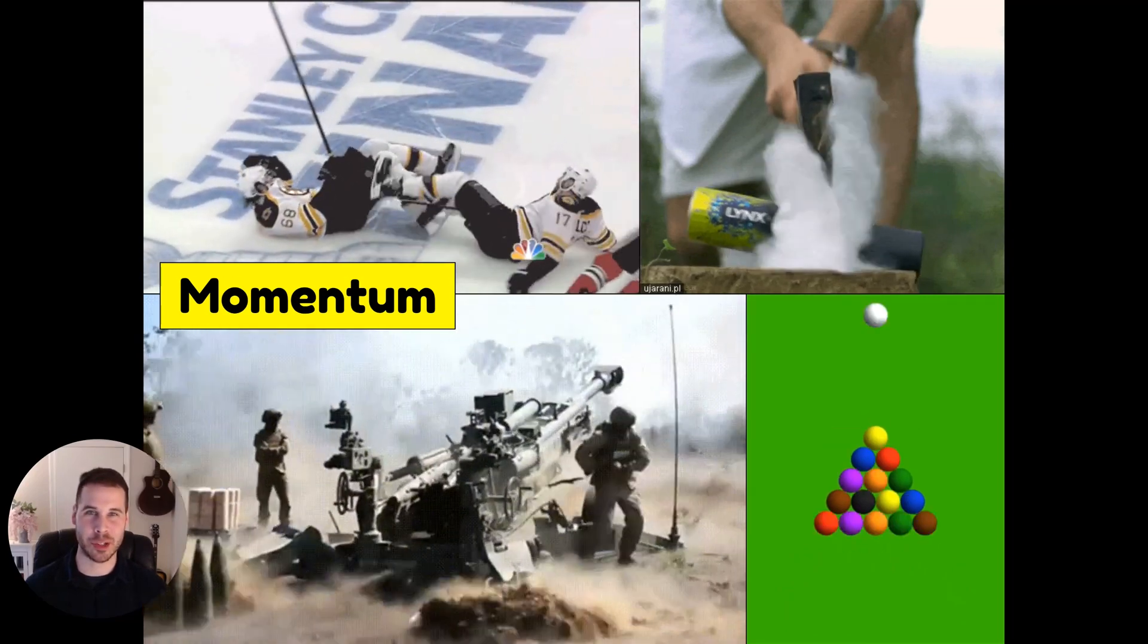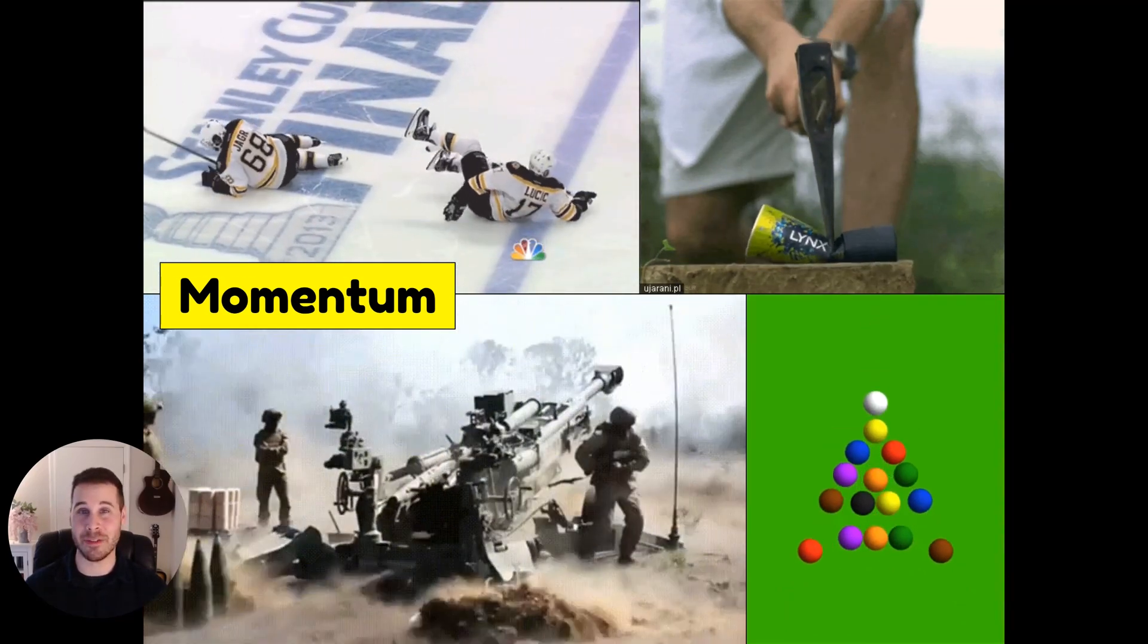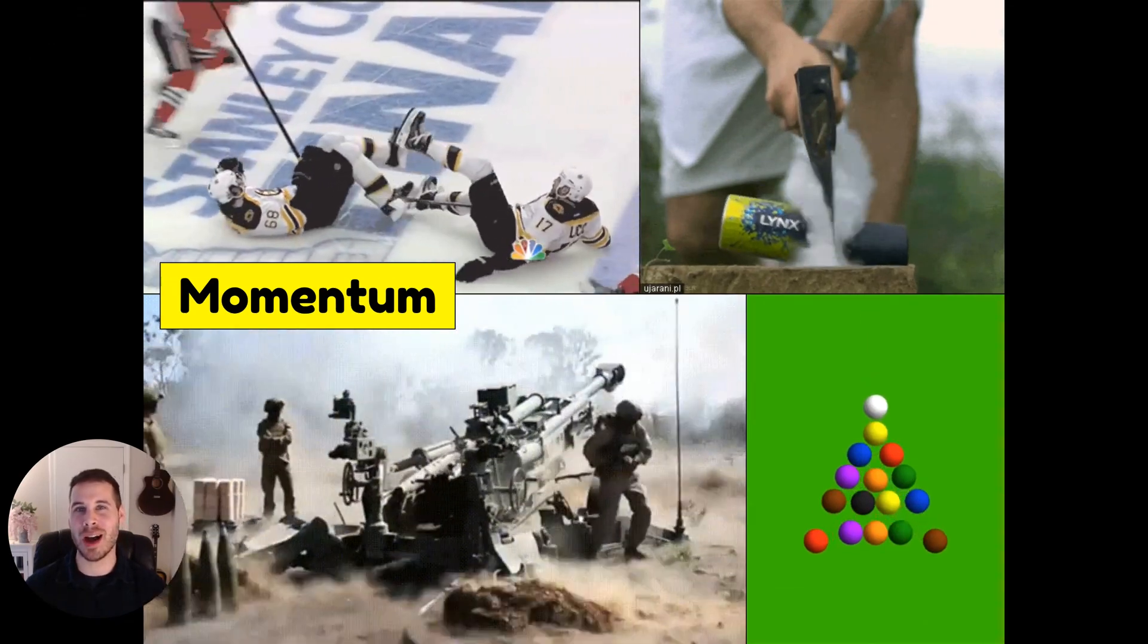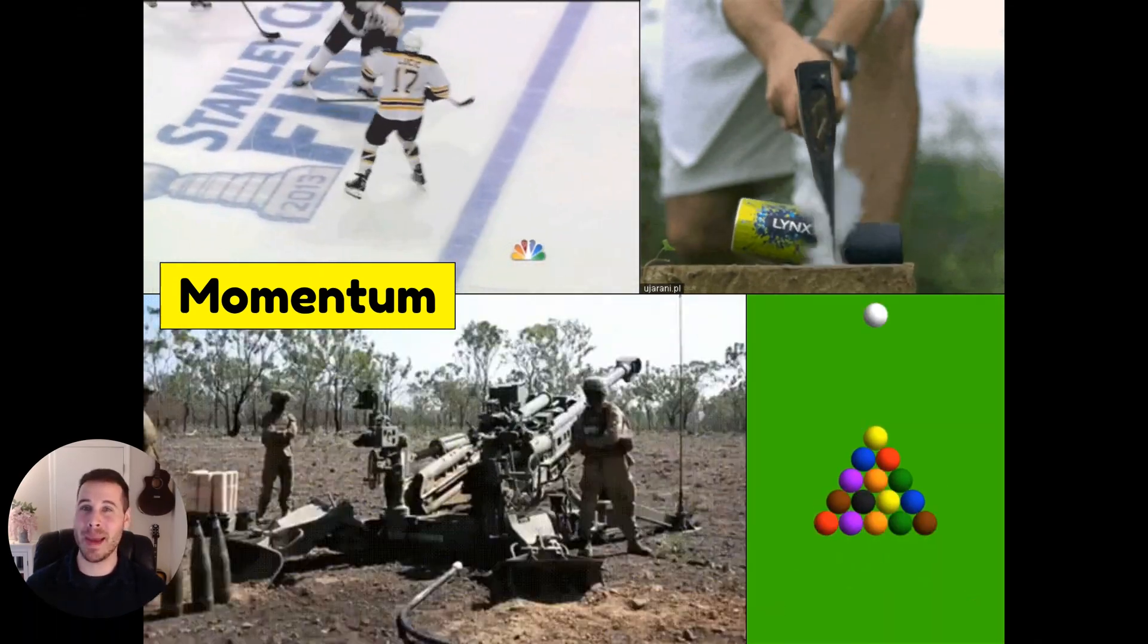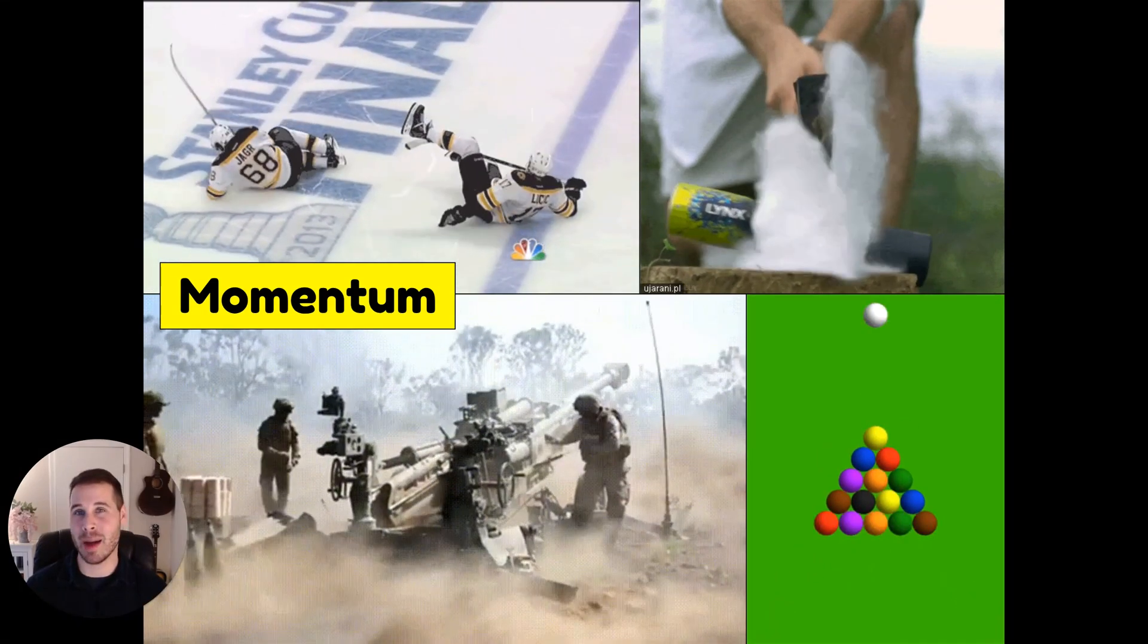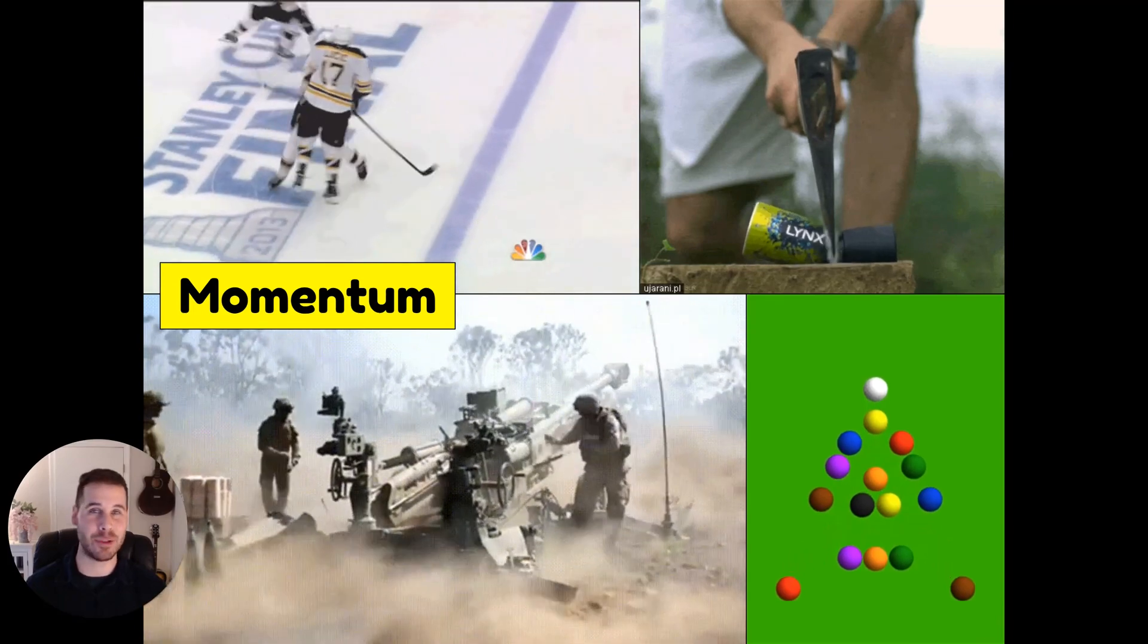There are four animations playing on the screen, and each of them demonstrates the effects of momentum. In the top left-hand corner, you can see two hockey players colliding, and it turns out that the momentum in each of their bodies before the collision can actually determine how much velocity they're going to have after the collision.